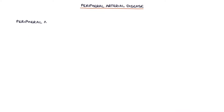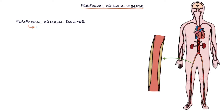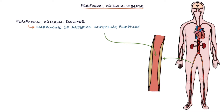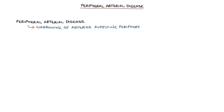Peripheral arterial disease refers to the narrowing of arteries supplying the limbs and the periphery, which reduces the blood supply to these areas. It usually refers to the lower limbs, resulting in symptoms of claudication.